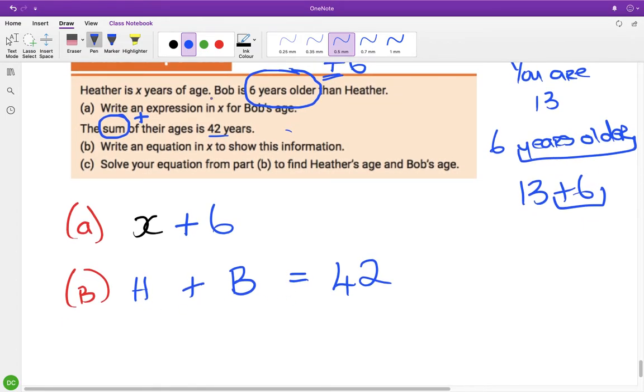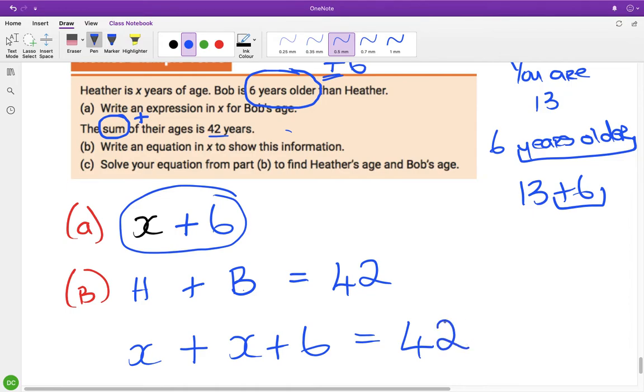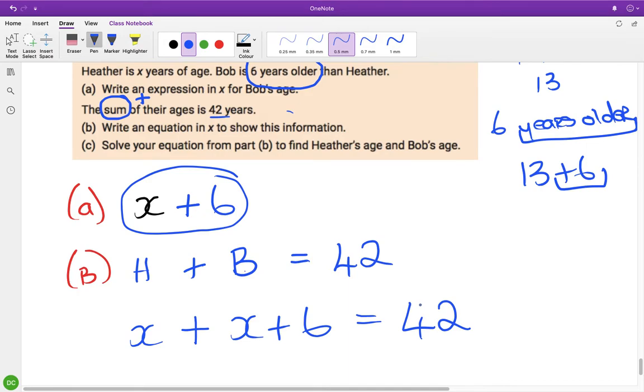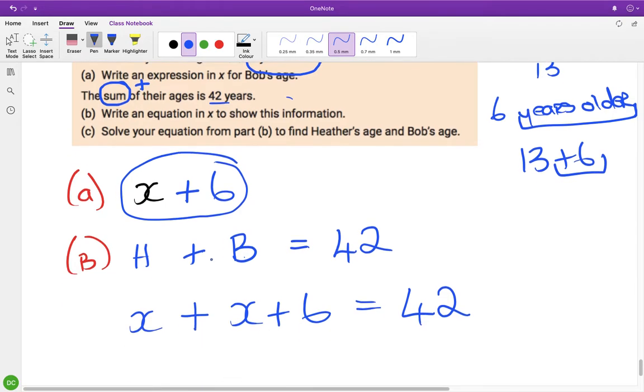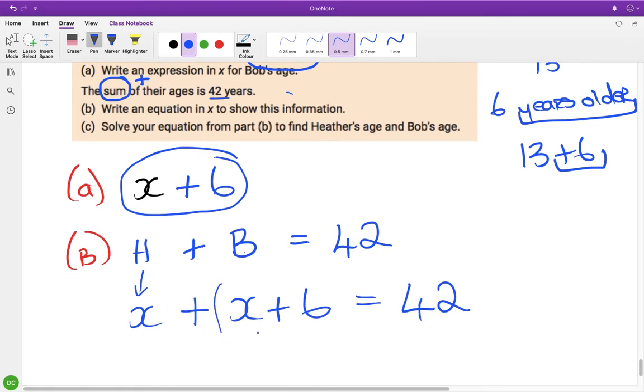So what's Heather's age? Heather is x years of age. So in place of Heather, we put in x. Plus, what's Bob's age? So Bob is six years older than Heather. So this is how old Bob is. x plus 6. So Heather's age plus Bob's age equals 42. So Heather is x and then Bob is six years older, which means he is whatever Heather is plus another six years. So this is Heather's age and then I don't want to put a bracket in, but that bit there is Bob's age. I'm just going to take that bracket back here because you don't need it. So Heather's age plus Bob's age equals 42.